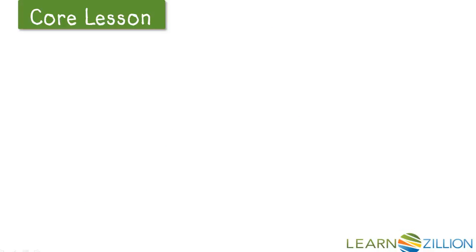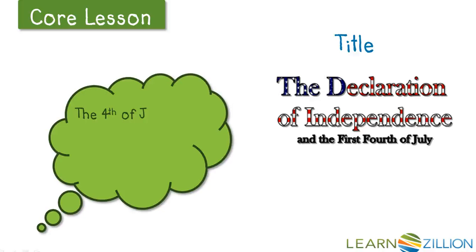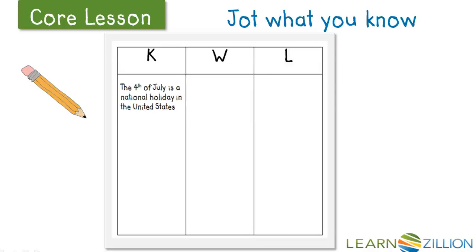Let's get started by making our first observation from the title of our article. I will model the process of thinking about what I already know using my own background knowledge. However, your K column may look different than mine — you may know more about this topic than I do. The title reads: The Declaration of Independence and the First Fourth of July. I know the Fourth of July is a national holiday in the United States. So in the K column, I wrote: The Fourth of July is a national holiday in the United States.